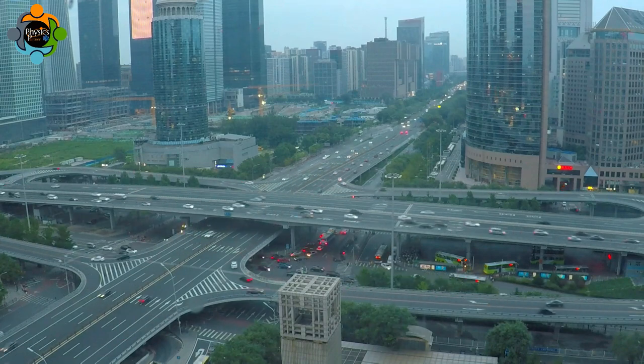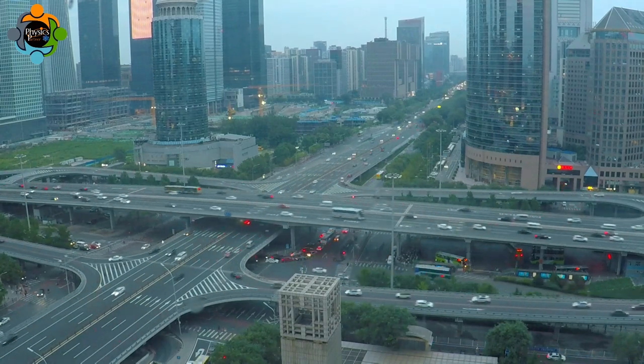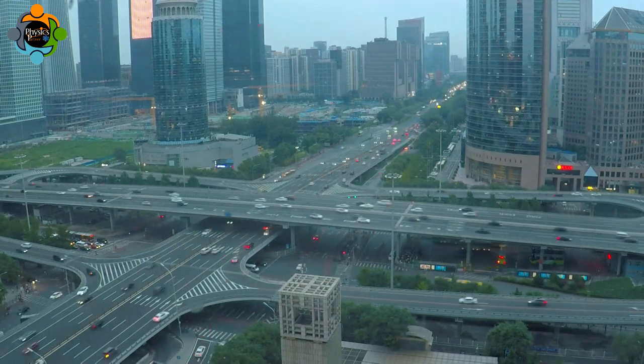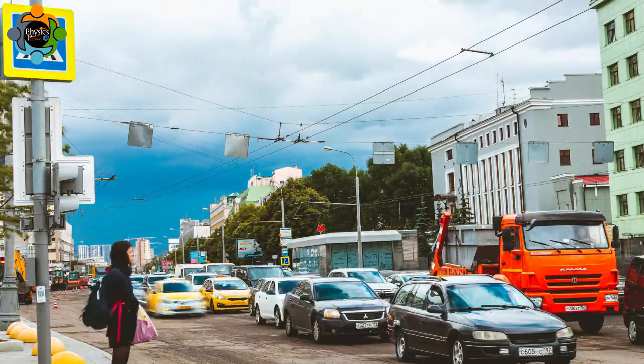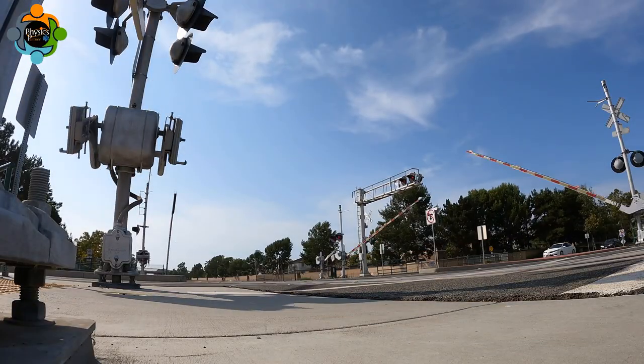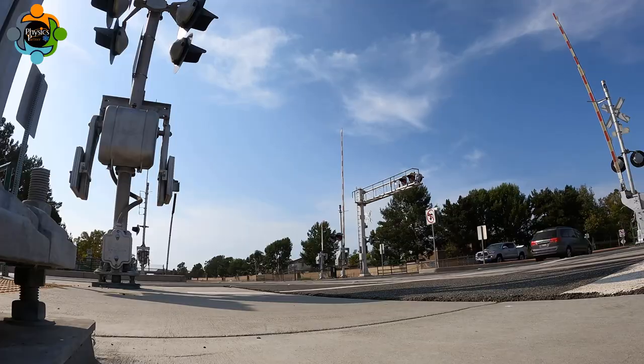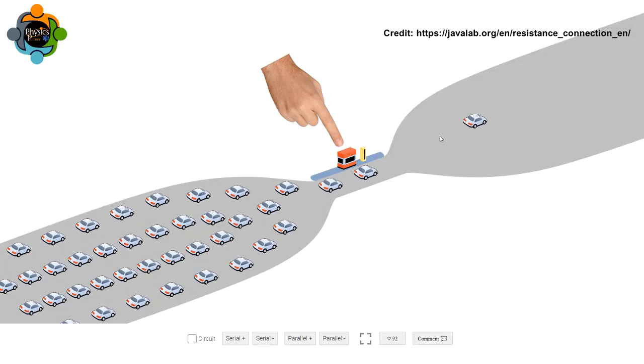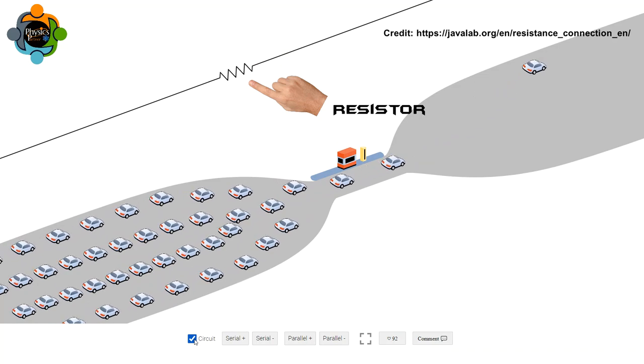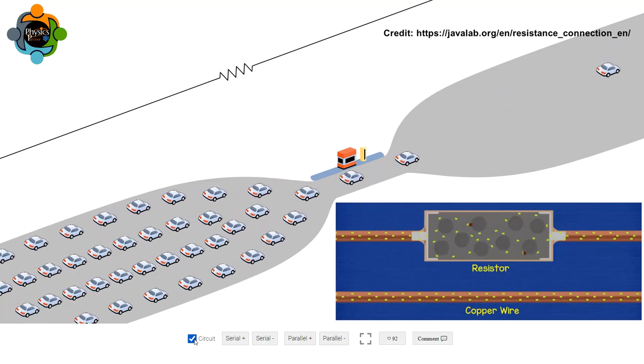To understand this concept better, imagine you are on a wide highway, the cars representing electrons all moving smoothly towards their destination. But what happens when these cars encounter resistance? Let's explore this concept using the idea of checkpoints on our highway. Think of this checkpoint as a resistor in an electrical circuit. It's narrow, so cars must slow down, causing a buildup.